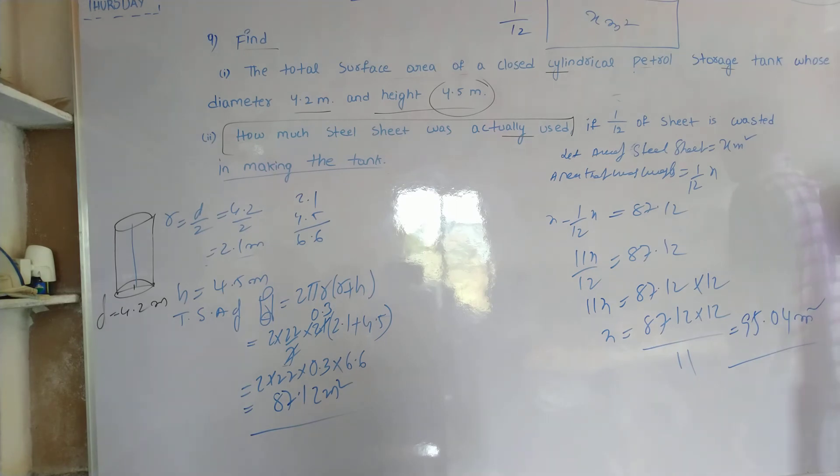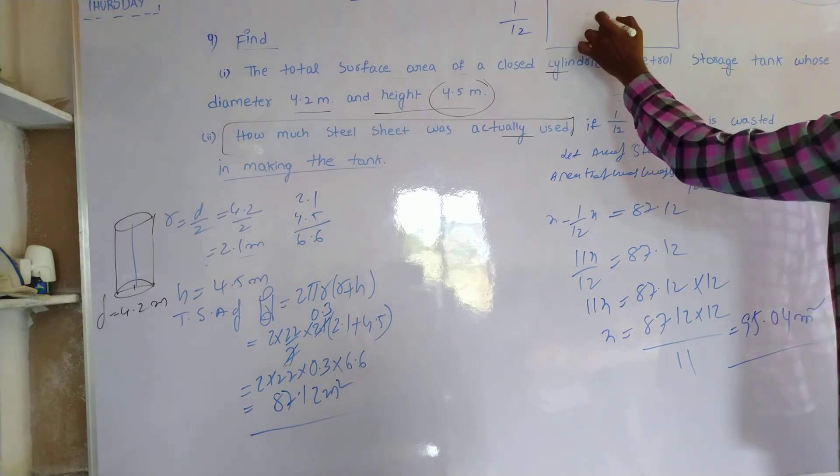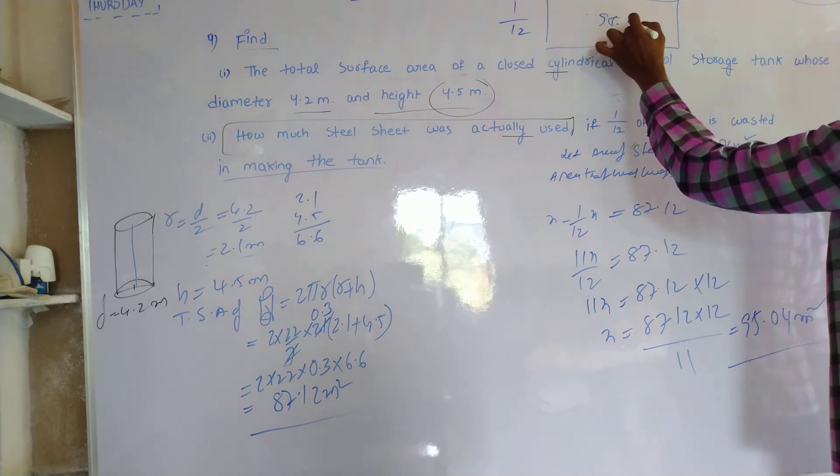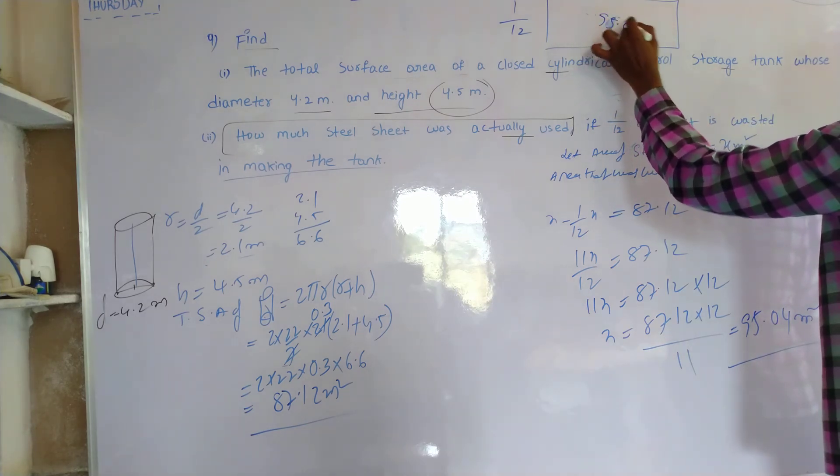So the original sheet is equal to 95.04 meters square.